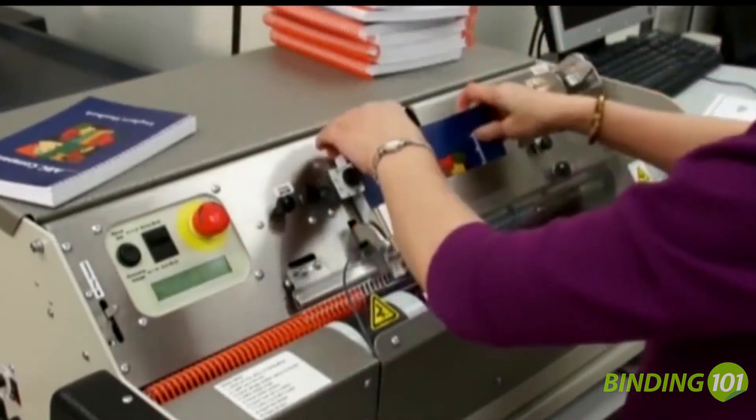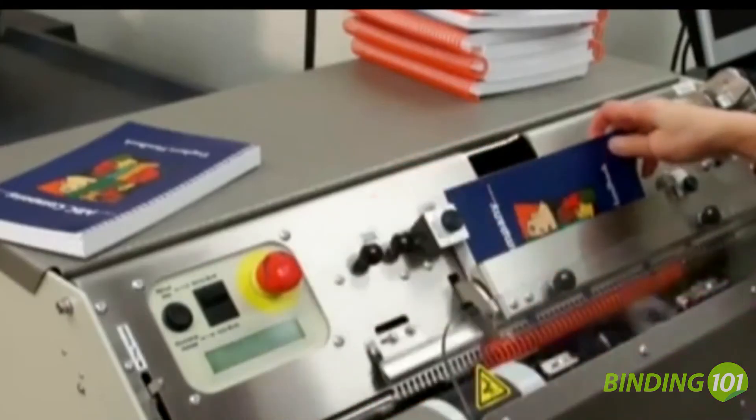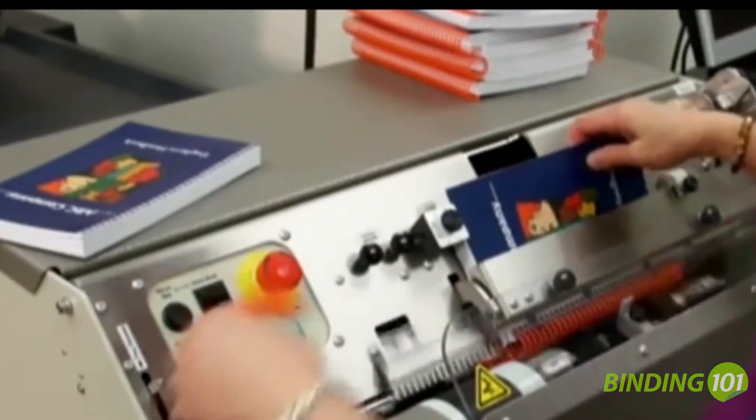That's it. Production speeds on the Coilmatic are rated as high as 450 books per hour.